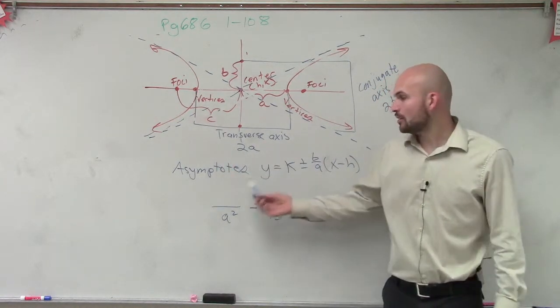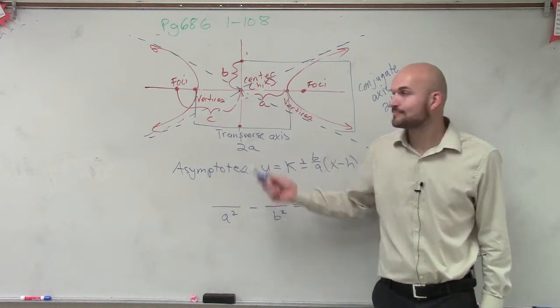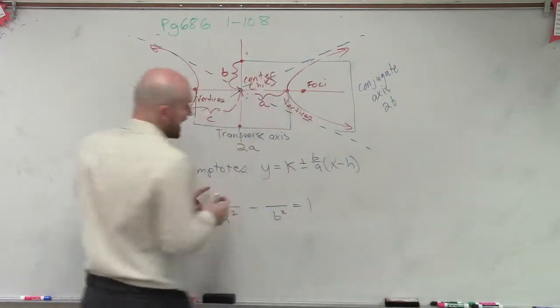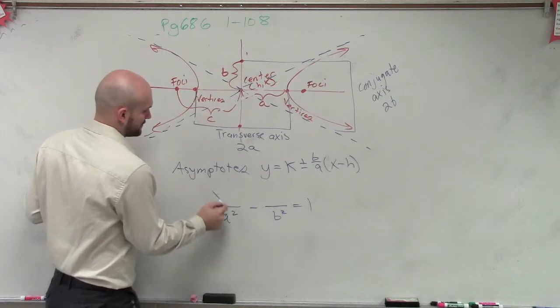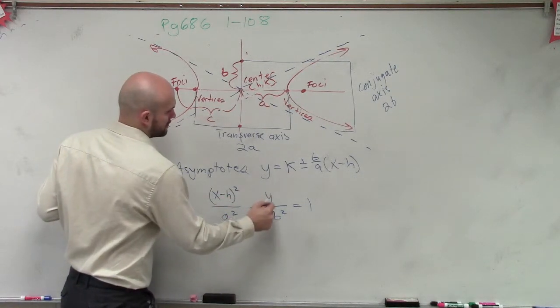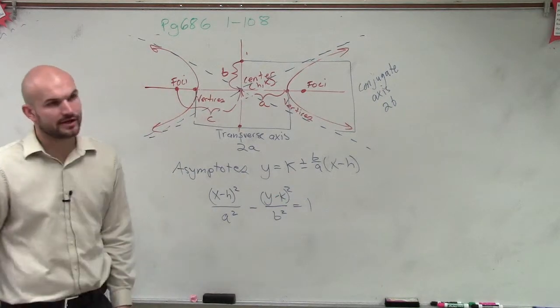So now we need to determine, well, what is going to be up top? Is it x minus h or y minus k? When you have a horizontal axis, therefore, your x goes over your a. And there's your formula.